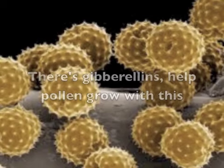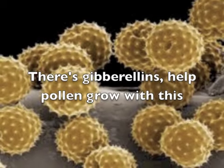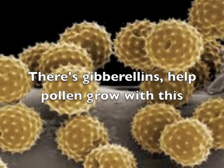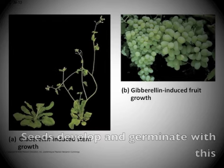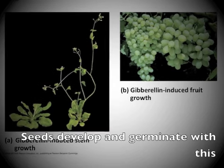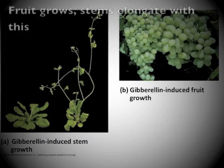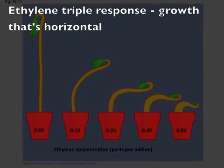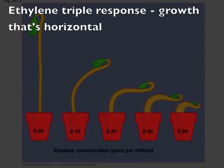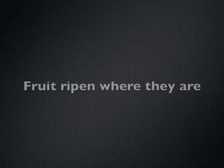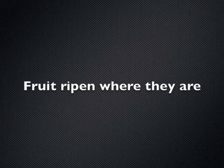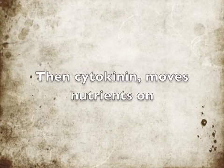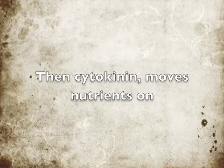There's gibberellins — help pollen grow, seeds develop and germinate, fruit grow, and stems elongate. Ethylene triple response: growth is horizontal, fruit ripens where they are.